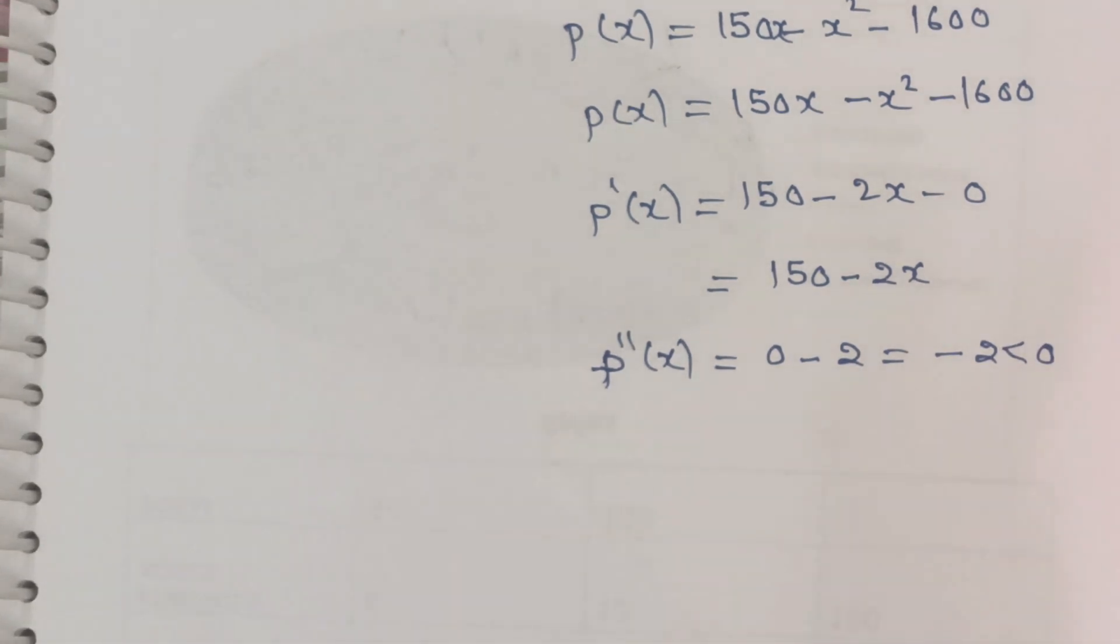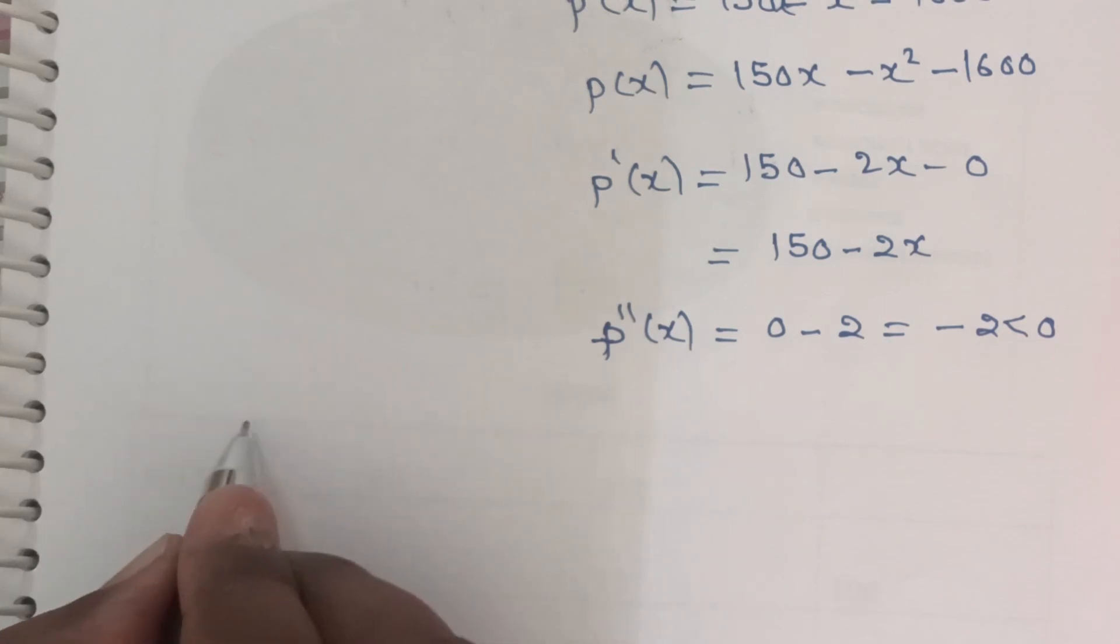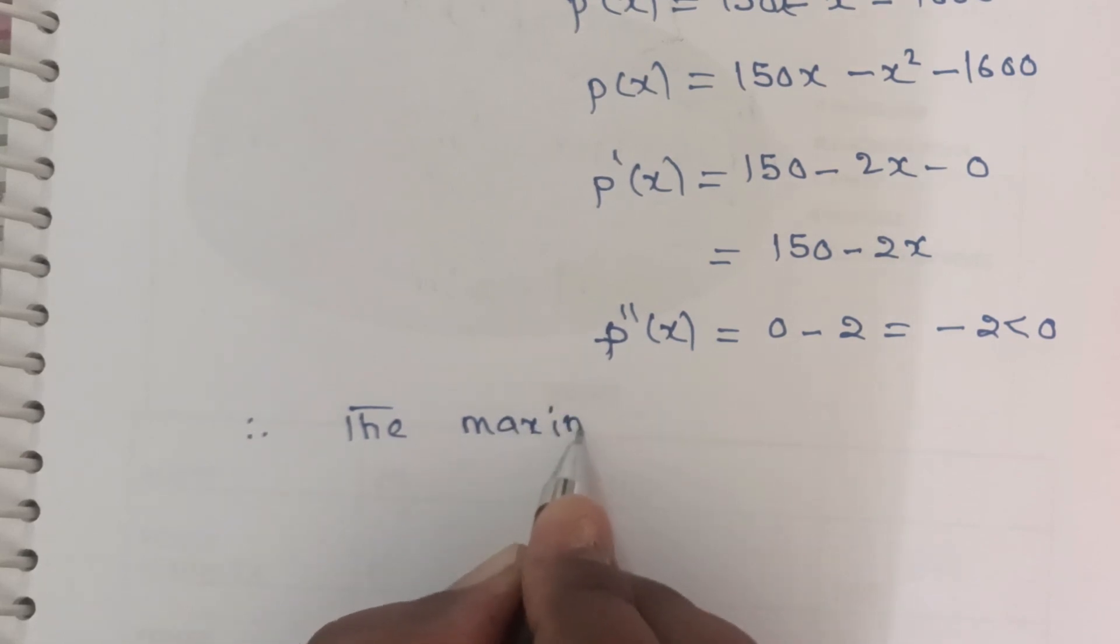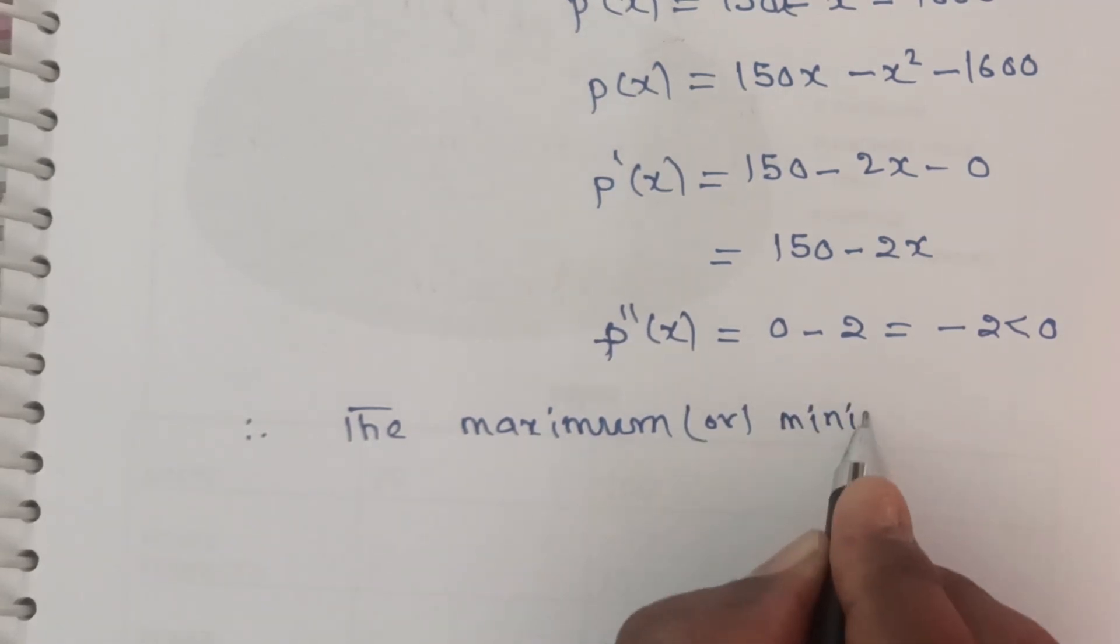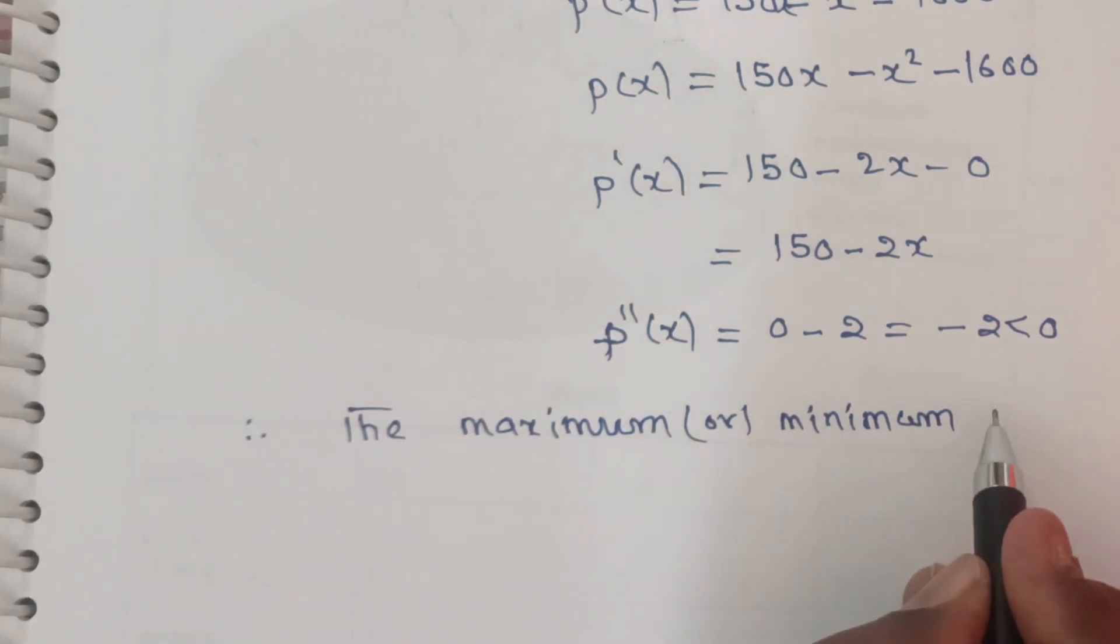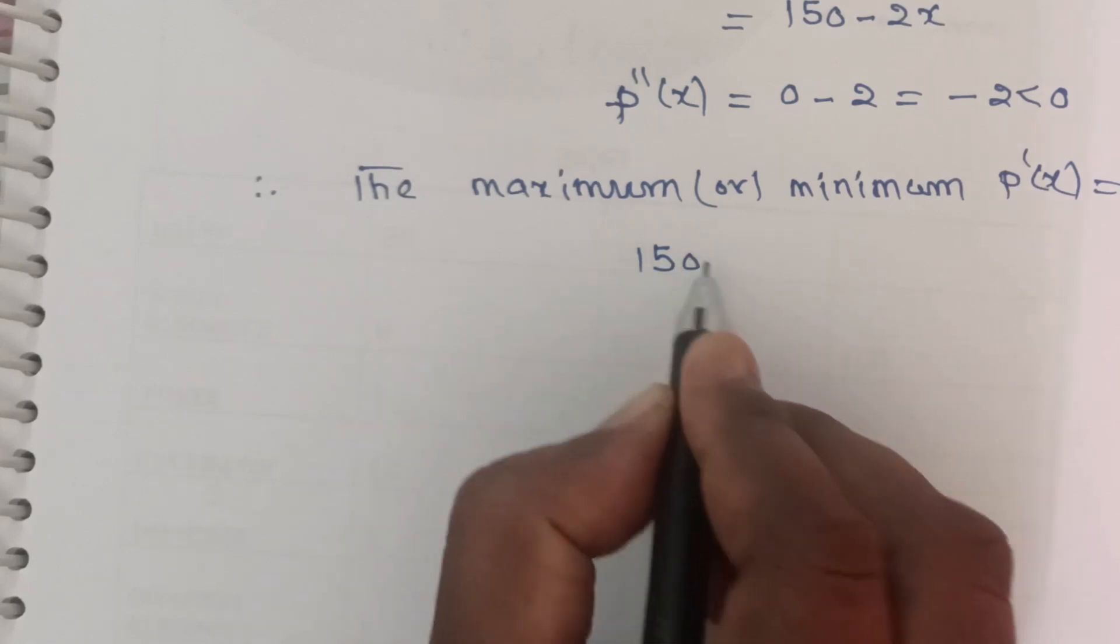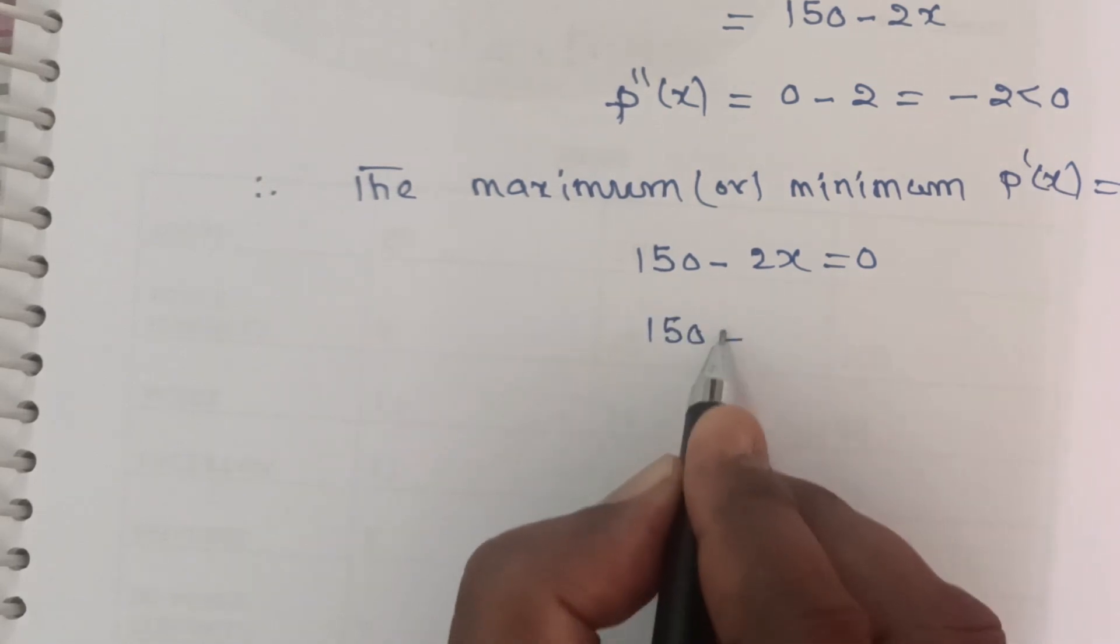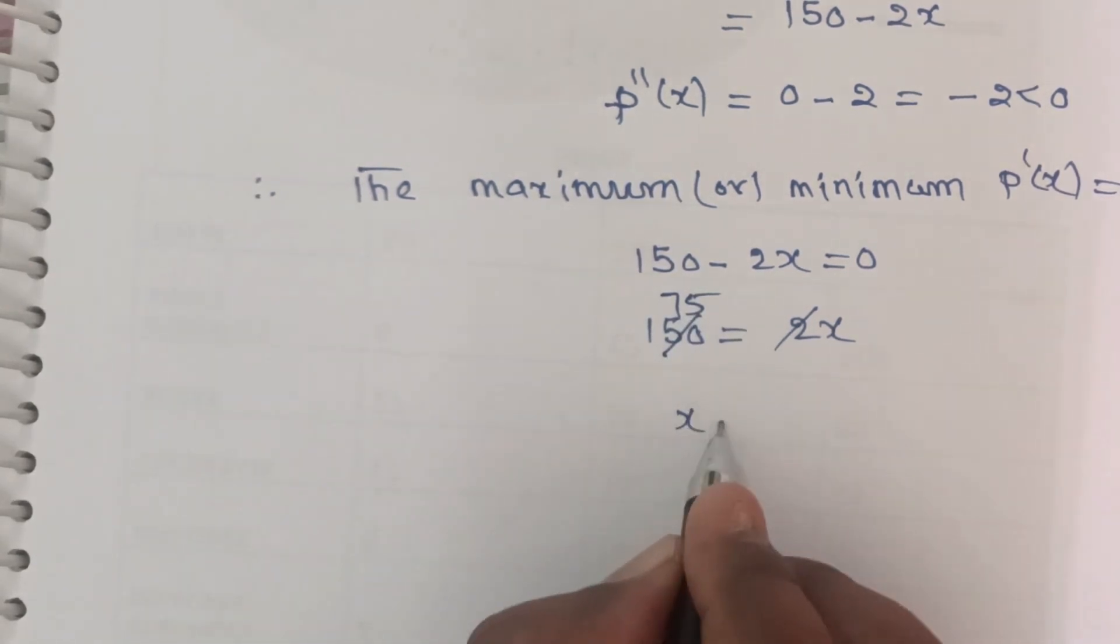Since p''(x) < 0, the function has maximum profit. To find the maximum, set p'(x) = 0. So 150 - 2x = 0, which gives 150 = 2x, therefore x = 75.